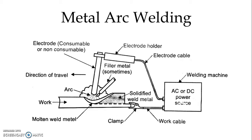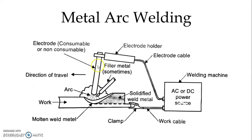In the figure we can see the supply of AC or DC power source. Here we have the work piece and the work cable. The work piece is made negative and the electrode, through the electrode holder, is made positive. If it is metal arc welding then the electrode itself is consumable.